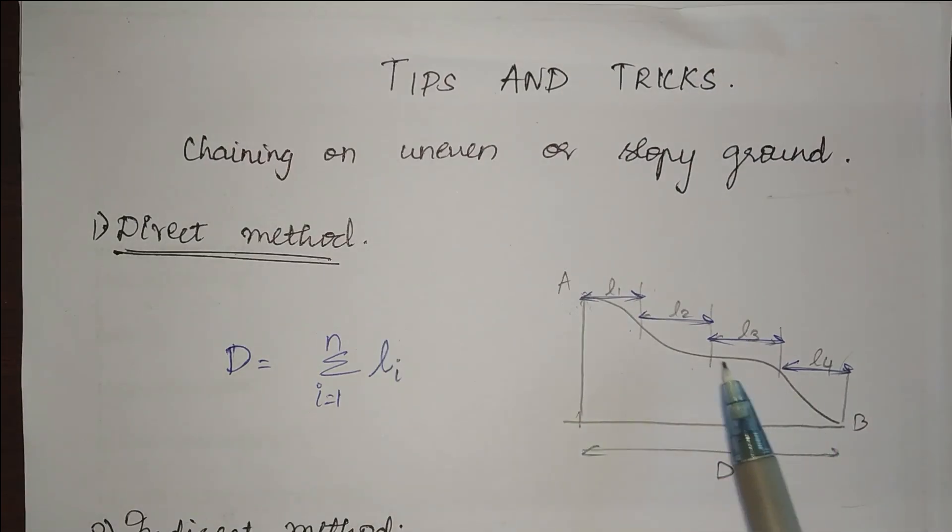There are two methods available. The first one is direct method. In direct method we will directly find the horizontal distance. We will divide the whole distance into small segments and find the horizontal length, so I will get l1, l2, and l3, and so on until I reach point B.